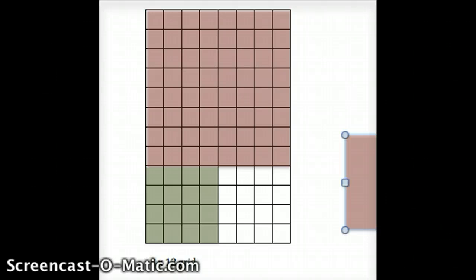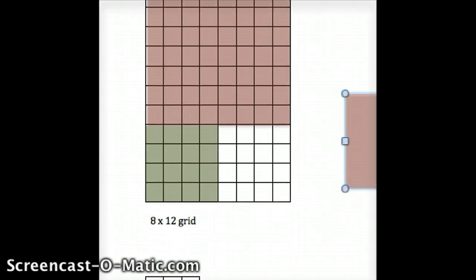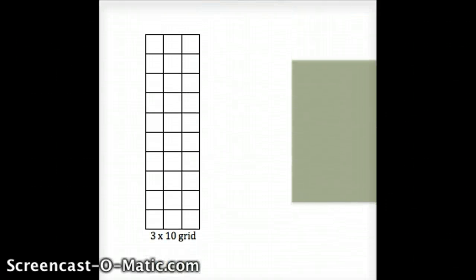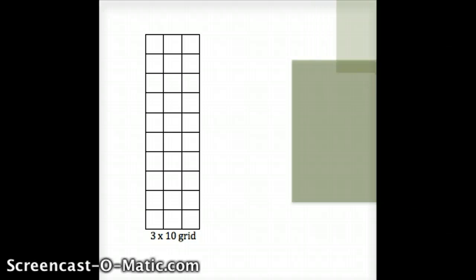Now look at this next example: 3 and 10. I want to find out what the greatest common factor is of 3 and 10, so I draw a 3 by 10 grid.